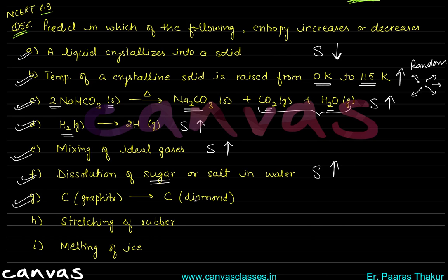F: Converting carbon-graphite to carbon-diamond allotrope. Diamond is harder than graphite. In diamond, the carbon atoms have less freedom to move — it is a more ordered arrangement. But in graphite, there is less ordered arrangement. So when going from graphite to diamond, the arrangement becomes more ordered and entropy decreases.